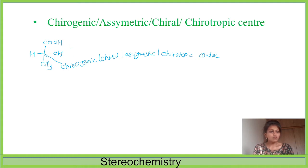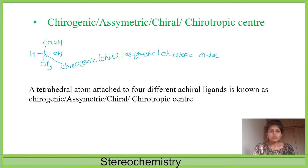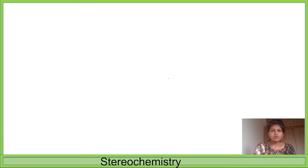In the lactic acid example, this carbon is both a stereogenic carbon and a chirogenic carbon. The tetrahedral atom attached to four different chiral ligands is known as the chirogenic center. The four different groups are COOH, OH, CH3, and hydrogen — all different.